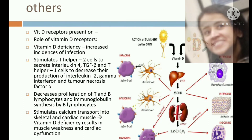Vitamin D receptors are also found in the skin, lymphocytes, monocytes, breast, and anterior pituitary gland. Vitamin D plays an important role in differentiation of immune cells and keratinocytes, and in regulation of growth and production of growth factors. Vitamin D deficiency increases incidence of infection. It stimulates T-helper 2 cells increasing interleukin-4 and TGF-beta, and decreases T-helper 1 production of interleukin-2, gamma-interferon, and TNF-alpha. It decreases proliferation of T and B lymphocytes and immunoglobulin synthesis. Vitamin D also stimulates calcium transport into skeletal and cardiac muscle, so deficiency results in muscle weakness and cardiac dysfunction.